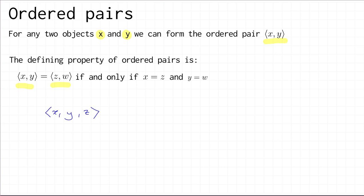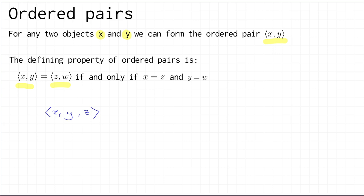So this is our definition of ordered pairs, and it enables us to define the thing which gives this video its title, which is the Cartesian product. So if you have two sets A and B, then the Cartesian product of A and B, which we write as A × B, we'll pronounce that as A cross B or A times B.